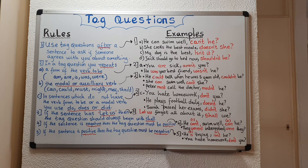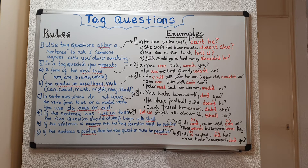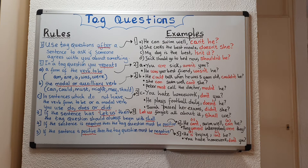Rule number one: use tag questions after a sentence to ask if someone agrees with you about something. We normally use tag questions to ask someone if they agree with us, and we use the tag question after a sentence in which you have told somebody about something.